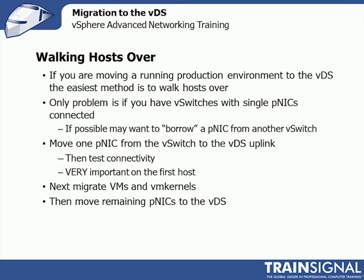The wizard also allows you to migrate VM kernel interfaces. Once you've established that it works — say we walk a couple of NICs over — we create a VM kernel interface on the distributed switch with a temporary IP, make sure we can ping out, delete that one, and then migrate the production VM kernel interfaces from the vSwitch to the distributed switch. This allows you to move hosts over without changing IPs.